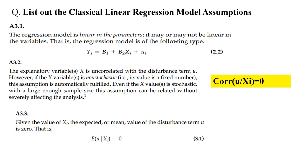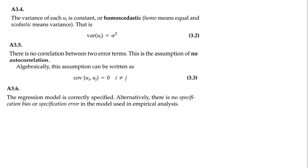The most important question: list out the Classical Linear Regression Model (CLRM) assumptions. The regression model should be linear in parameters but may or may not be linear in variables. The expectation of the error given X_i should be zero. The variance of u_i should equal sigma squared (homoskedasticity). The assumption of no autocorrelation implies covariance of u_i and u_j equals zero for all i not equal to j. The final CLRM assumption is that the model is correctly specified.